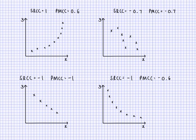Comparing both together: a scatter plot where points go right and up gives SRCC of 1 but PMCC of around 0.6, since the points are not on a line. Another plot with a general downward trend but not perfectly linear gives both SRCC and PMCC around negative 0.7, since it's close to but not exactly on a line.